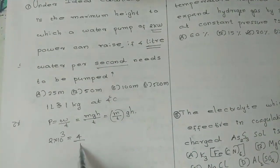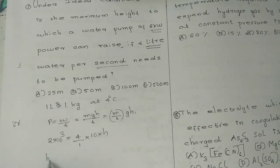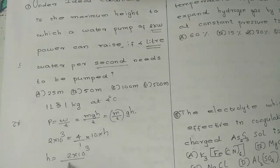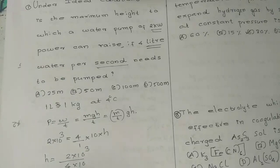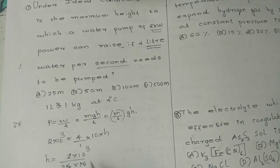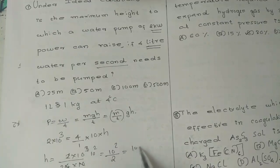Using the formula: power equals work by time, and work equals mgh. So h equals P divided by (m times g). Substituting: h equals 2 into 10 raised to 3, divided by 4 into 4 into 10, giving h equal to 10 squared divided by 2. Therefore h is approximately 50 meters.